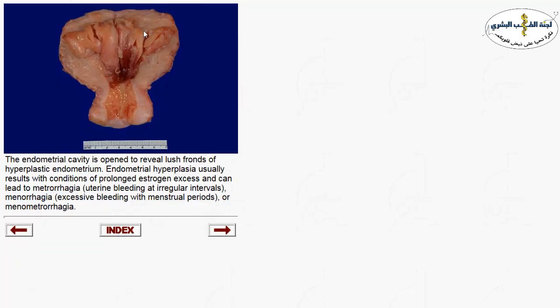One of the neoplastic processes affecting the endometrium is endometrial hyperplasia. This shows hyperplastic changes within the endometrial glands. It is a diffuse process involving the whole lining of the endometrium. Patients usually present with menorrhagia or menometrorrhagia — irregular uterine bleeding.